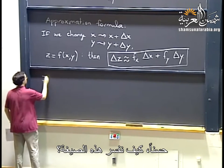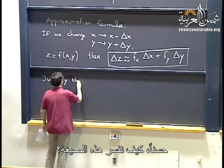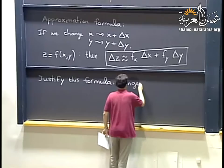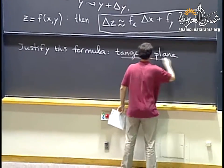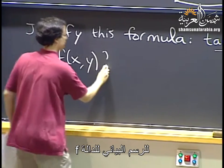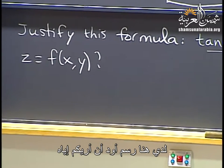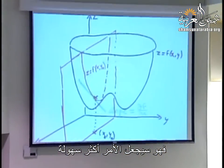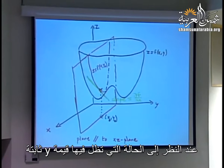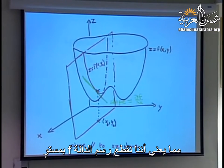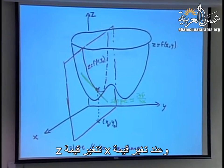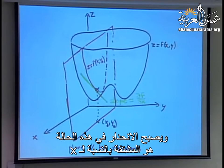So how do we justify this formula? One way to think about it is in terms of tangent plane approximation. Let's think about the tangent plane to the graph of a function f. Partial f, partial x was obtained by looking at the situation where y is held constant — so I'm slicing the graph of f by a plane parallel to the xz plane. When I change x, z changes and the slope of that slice is the derivative with respect to x.